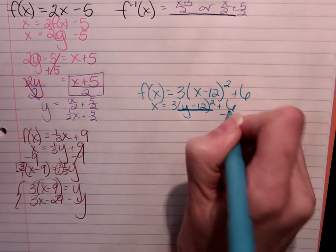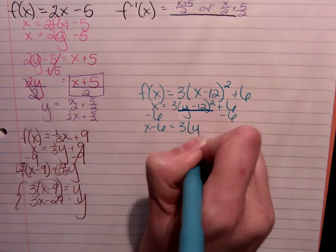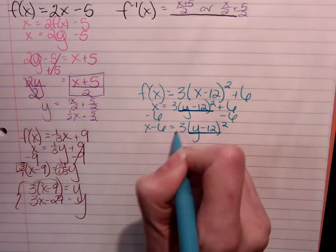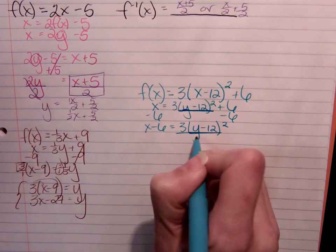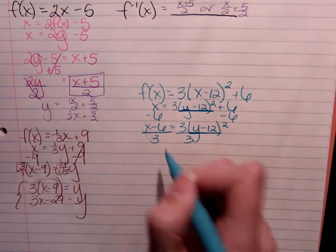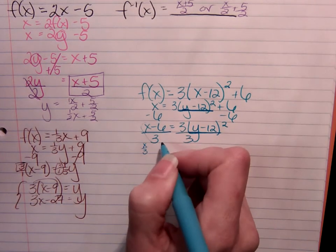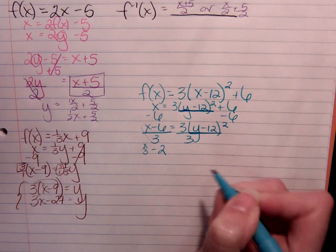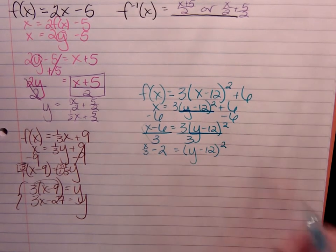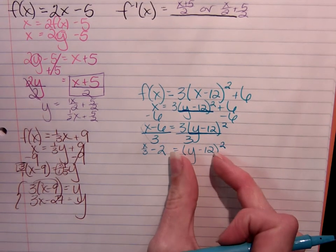Subtract the 6 from both sides just like we normally would. Because we're treating this as one entity, the next thing we're going to do is divide by 3. Divide everything by 3. x over 3, that's not going to simplify at all. But 6 over 3, 6 divided by 3 is 2, so I can write minus 2, equals the quantity y minus 12 squared. I've gotten rid of everything else. Now I'm ready to start dealing with these parentheses and this exponent.